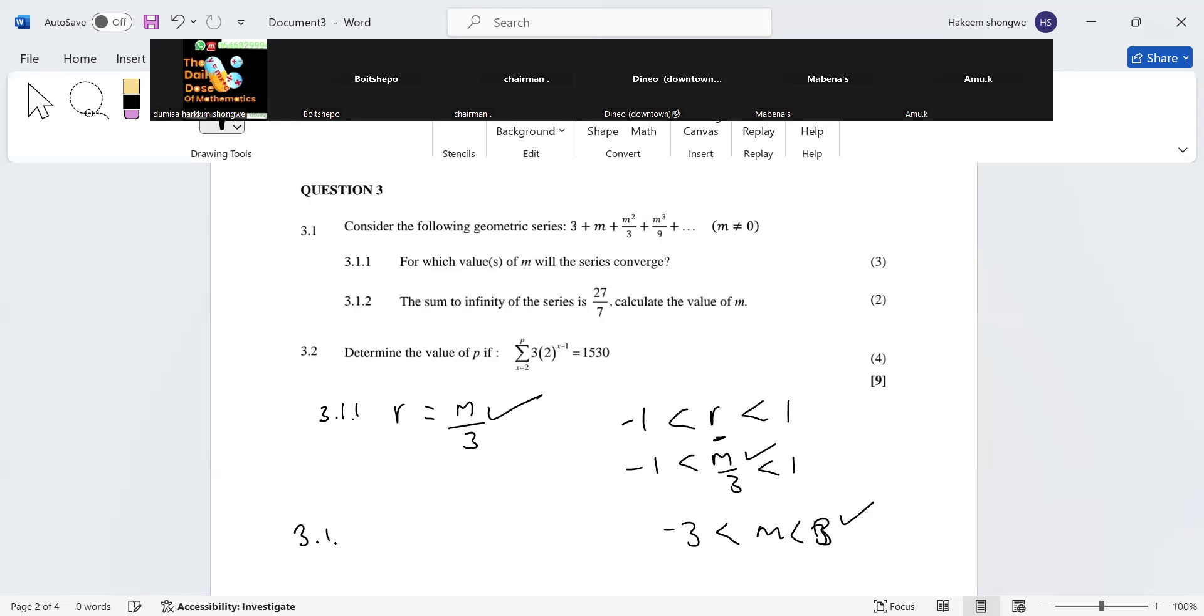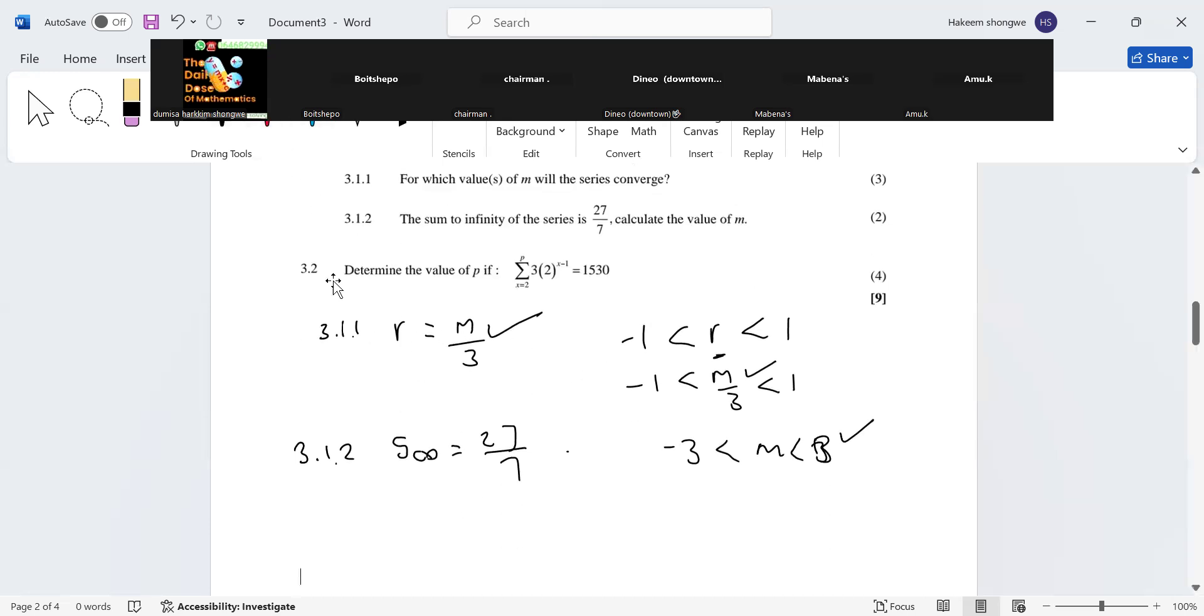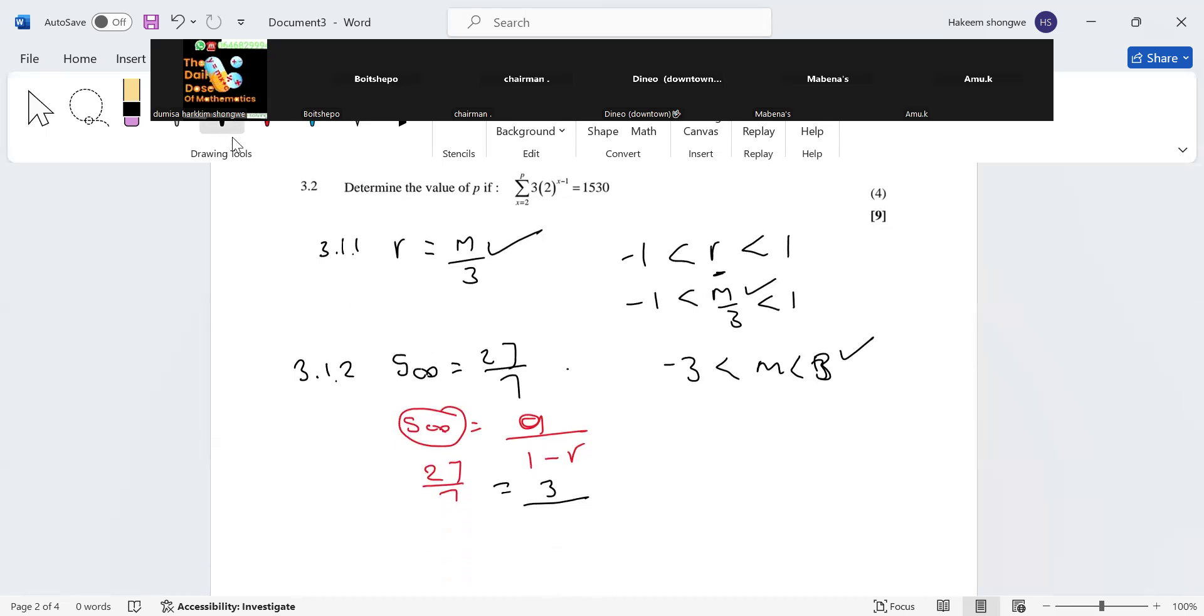Okay, 3.1.2 they say the sum of infinity of the series is 27 over 7. They say calculate the value of m. So here we are given the sum to infinity, s infinity, and then we are going to substitute. We have a and r, we have one minus r. One minus m over 3, m all over 3.